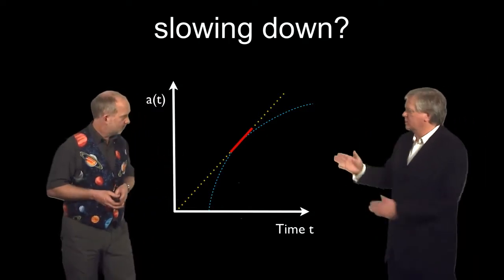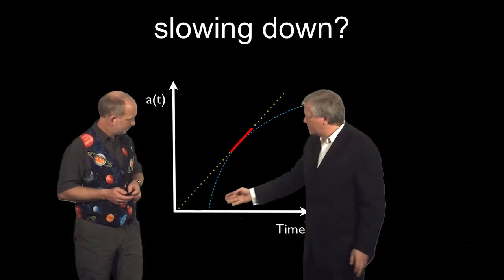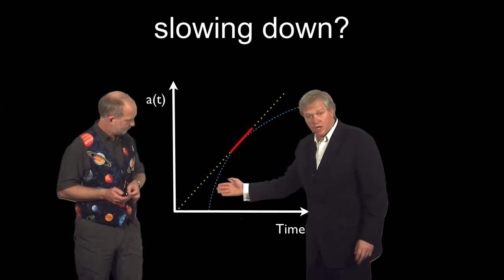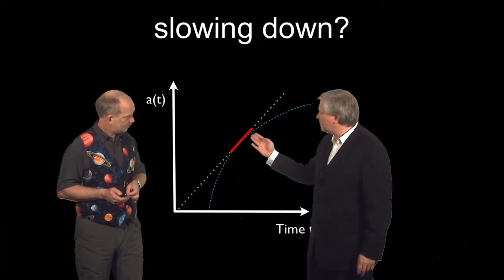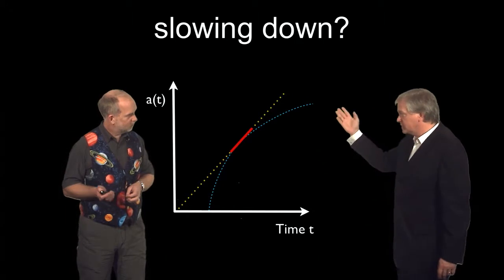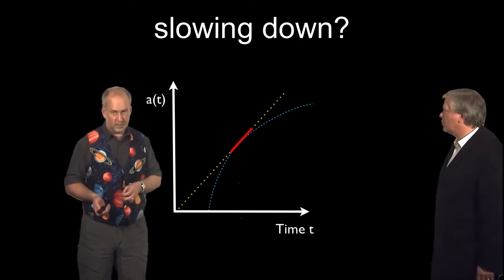So let's try one here, okay? So if we have this model, this model is a model where there's a lot of gravity, it's slowing down, but there's not so much gravity that it slows down completely, it just keeps on getting bigger and bigger over time.